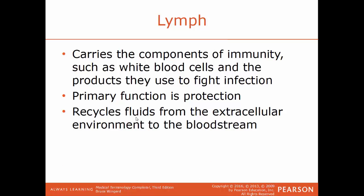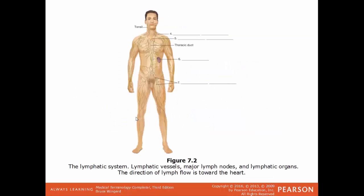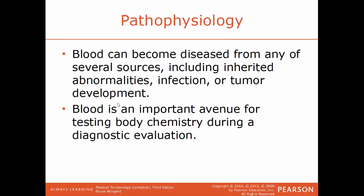Lymph is a fluid that travels throughout the body. It carries the primary components of the immune system, such as white blood cells and the products they make to fight infection and keep you healthy. Its primary function is to protect you. Another function is to recycle fluid found in the extracellular environment and return it to the bloodstream. The lymphatic system includes lymph nodes, lymph glands, lymph fluid, and larger organs such as the thymus and spleen. It works closely with the cardiovascular system to move material around the body.